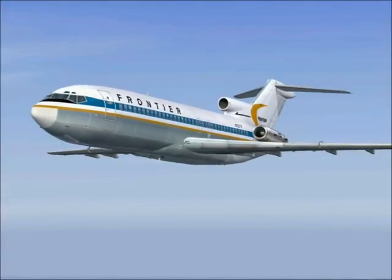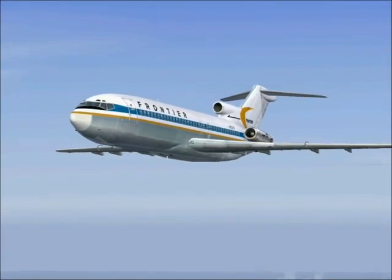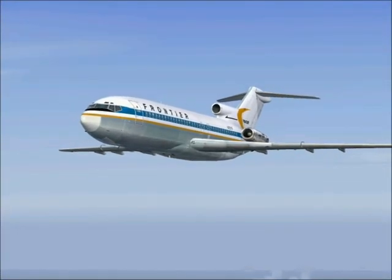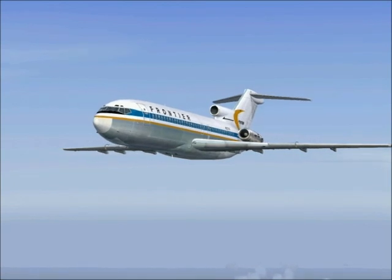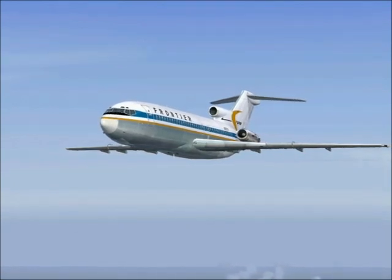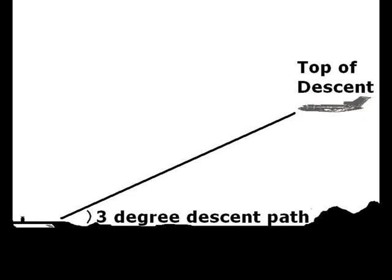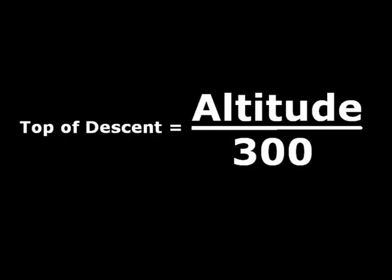If you normally fly at high altitudes and can divide or multiply big numbers by 3, then you're already equipped to calculate where to start the descent. You will normally plan to fly a 3-degree descent path. In order to calculate the top of descent, simply divide your altitude by 300 — that is, divide your flight level (your altitude divided by 100) by 3.